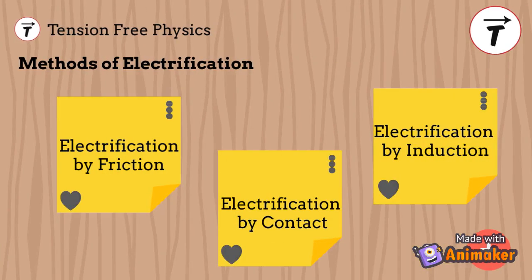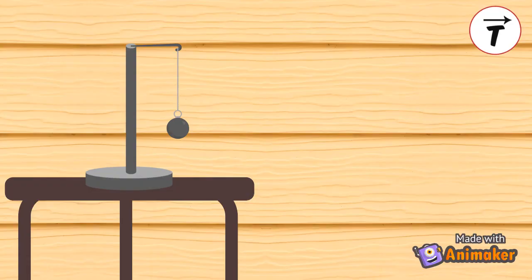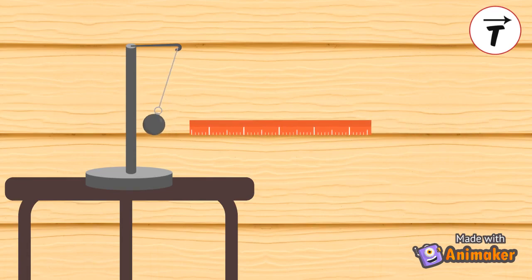I studied electrification by contact. I put the rubbed end of an electrified ruler in contact with the ball of the electrostatic pendulum. The ruler repels the ball indicating that the electrostatic pendulum has electrified by placing it in contact with the electrified ruler.